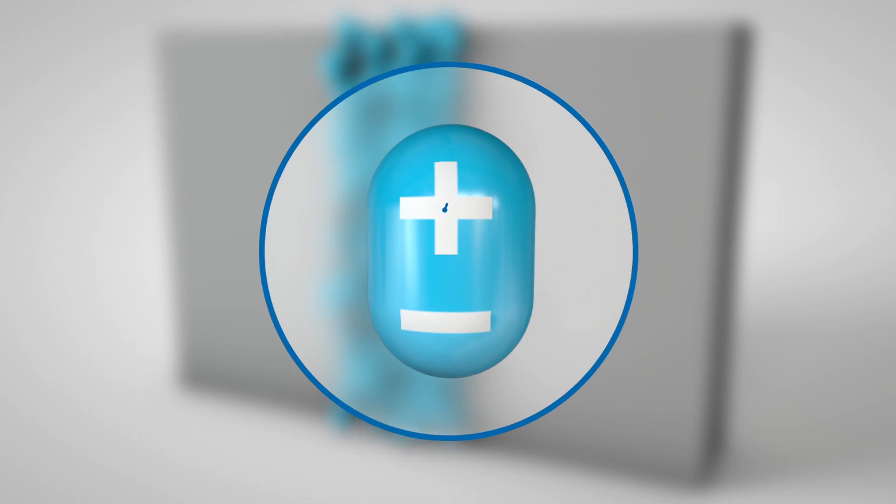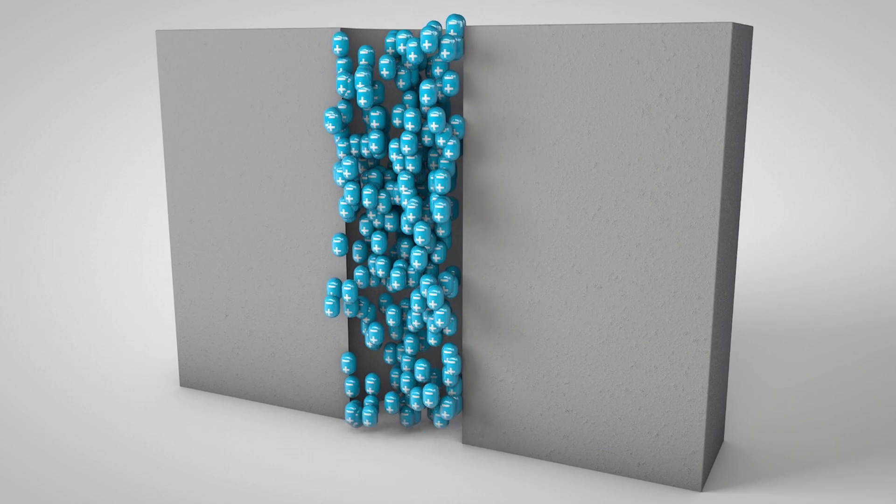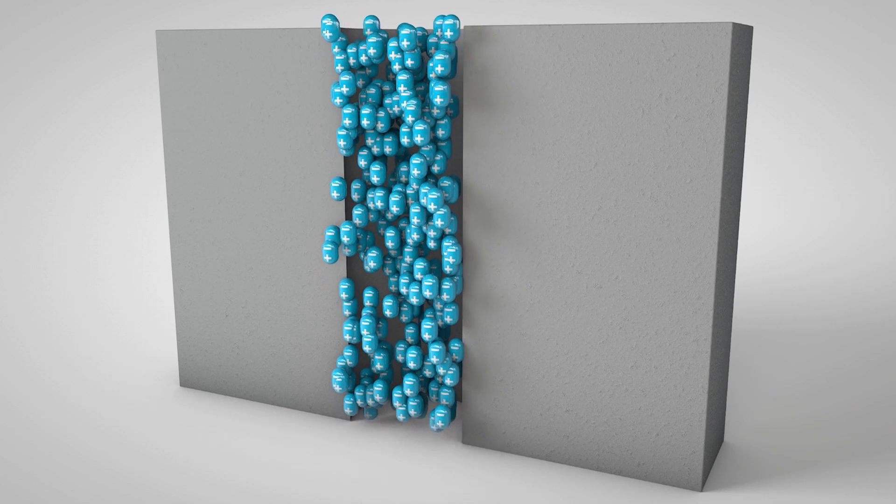Water molecules have a positive and a negative pole, like a small magnet. Water rises by capillarity through the pores of the walls,